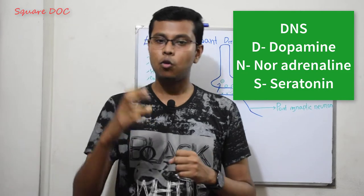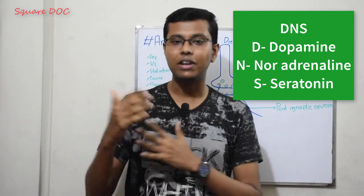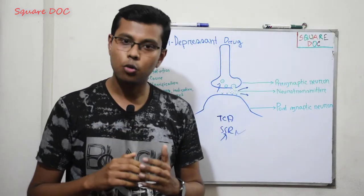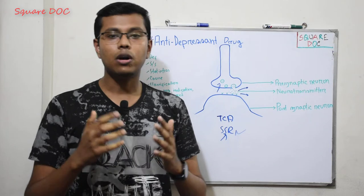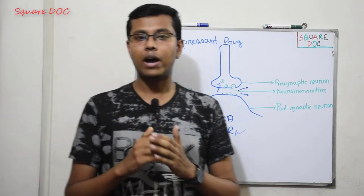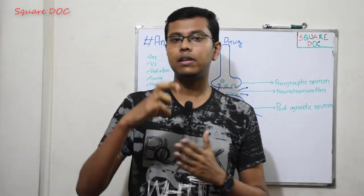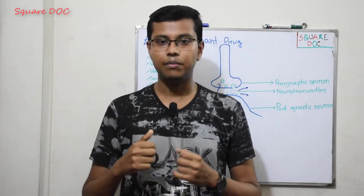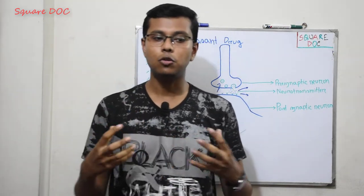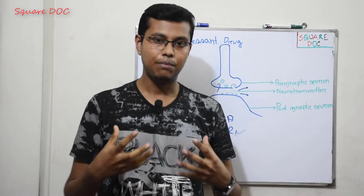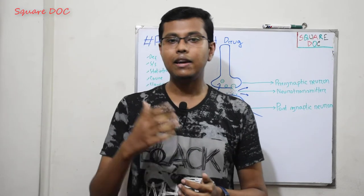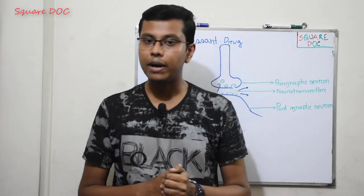When these three neurotransmitter levels in our brain are reduced, depression occurs. So, antidepressant drugs work to restore these three levels. When the brain's neurotransmitter levels are reduced, depression occurs. This is the Monoamine Hypothesis.